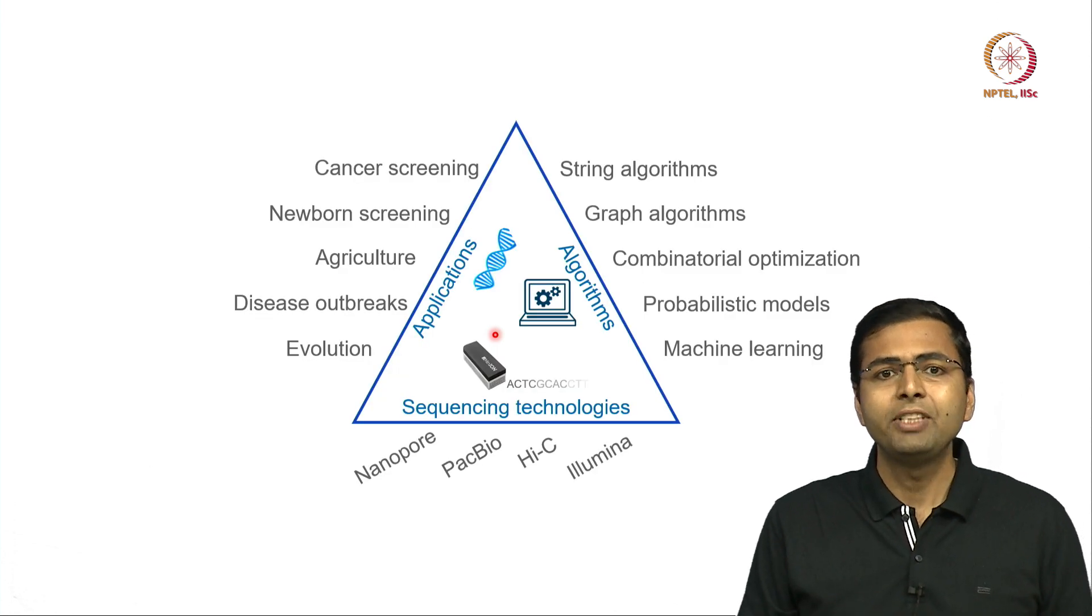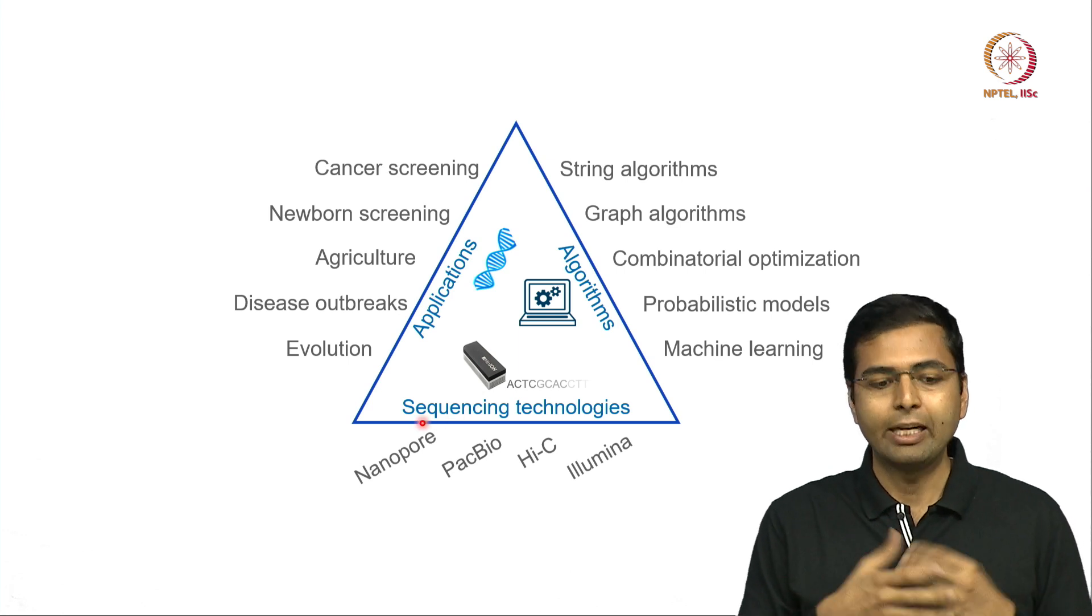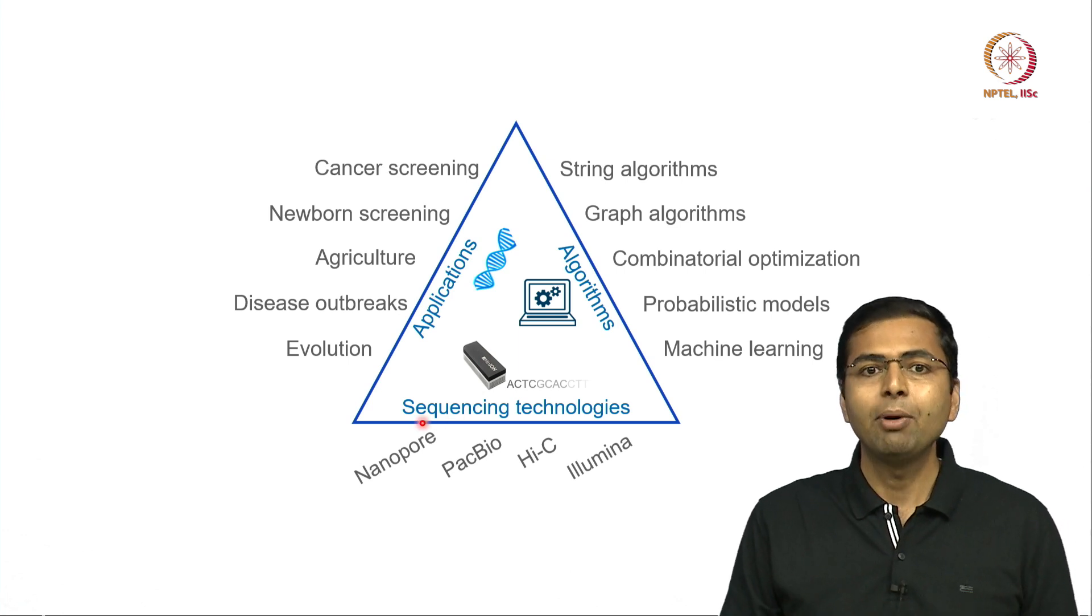There are a number of sequencing technologies that can be used in the high throughput setting. They enable a large number of applications, for example, cancer screening, newborn screening, agriculture, disease outbreaks, and evolution.